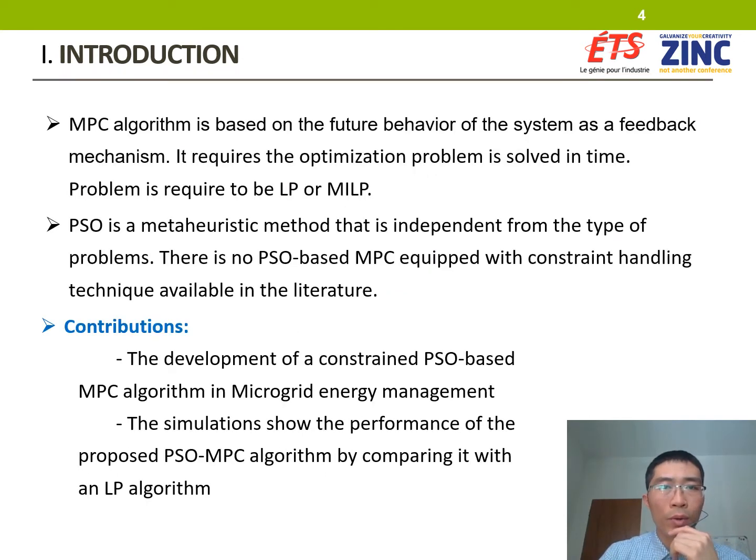To effectively schedule the operation of energy storage in microgrids under uncertainty, a model predictive control scheme is applied, which is based on the future behavior of the system. It allows implementing a sequence of optimization problems based on updated measured data, forecasted PV generation, load, and market price. This makes it able to adapt to the imperfection of forecasted data.